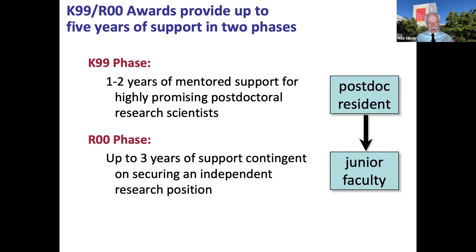The R00 phase is largely contingent on securing an independent research position, typically a tenure-track assistant professor position at a research institution. The approval to move from the K99 to the R00 phase is determined by program staff — it does not have to go through re-review — and it's dependent on completing the goals for the K99 phase and securing a position for the R00 phase. You do not have to do the two phases at different institutions; you can stay at the same institution as long as you can make the argument that it will support your research.